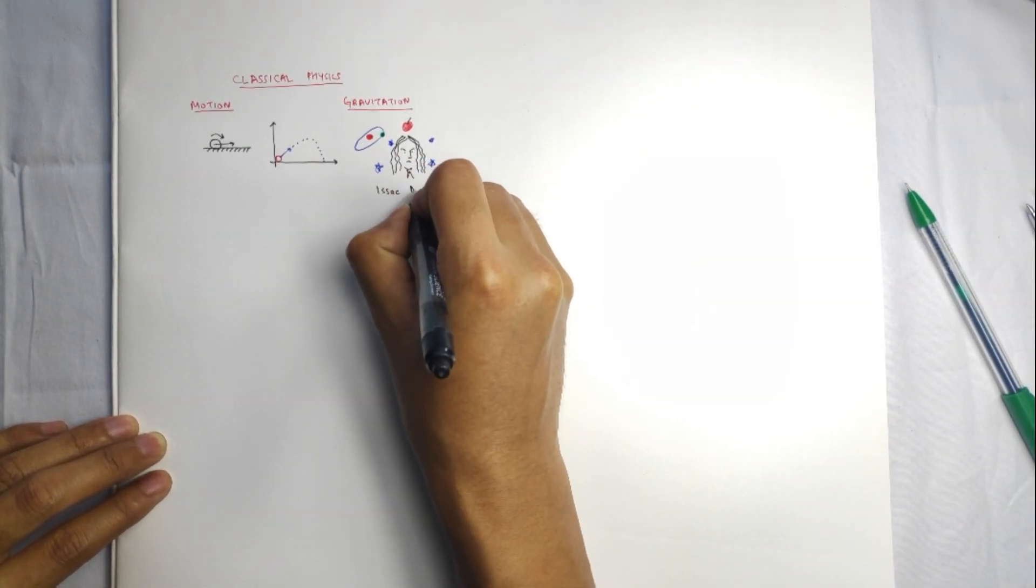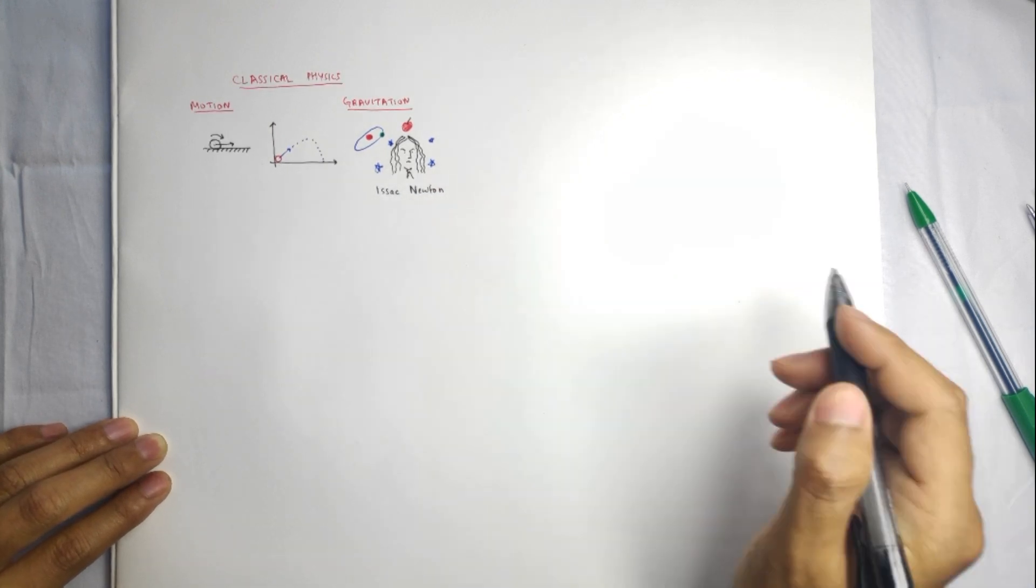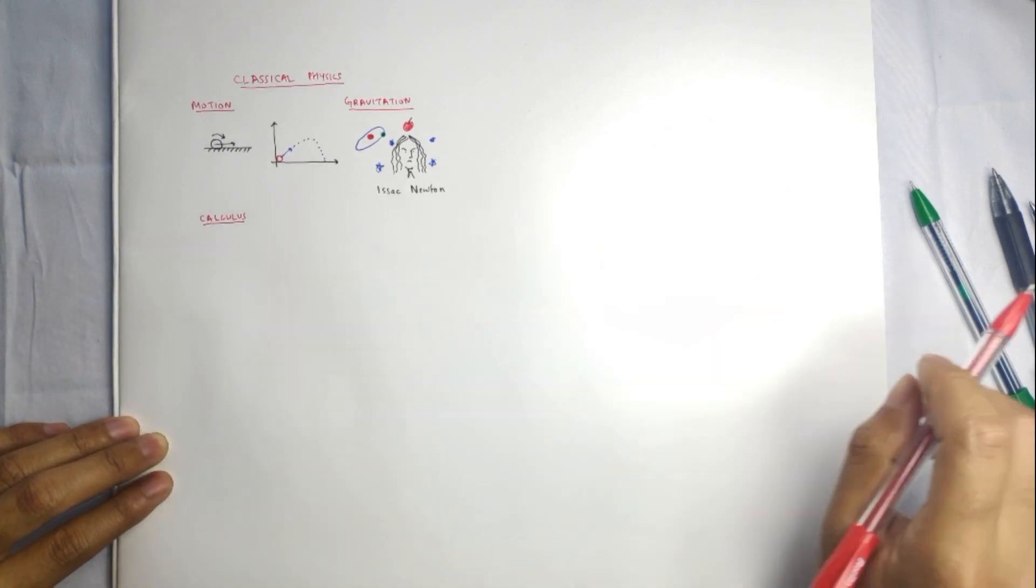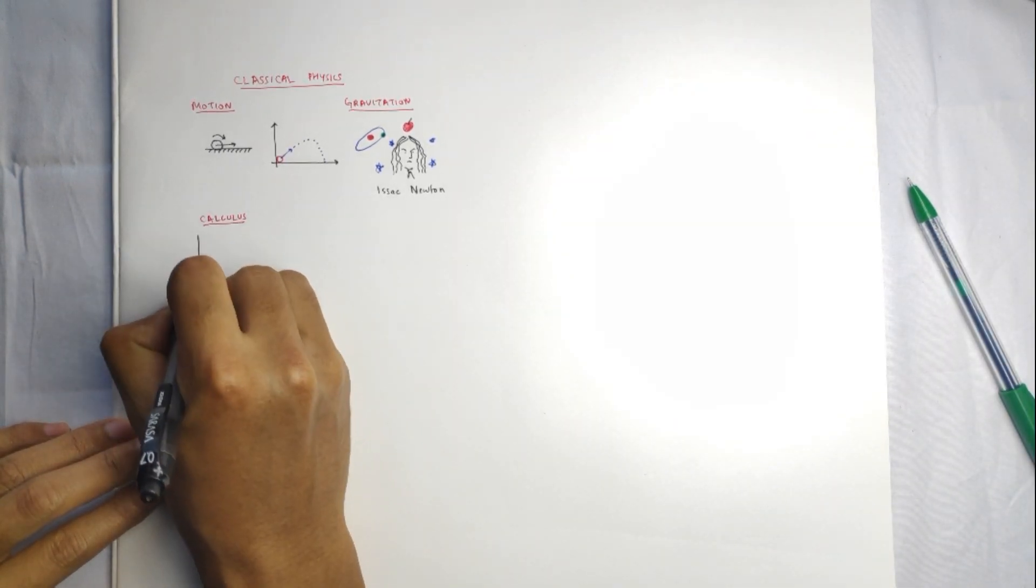He had to find new ways of calculating planetary motion because those planets would not move in rectilinear fashion and would not allow him apply his kinematics to laws of motion.